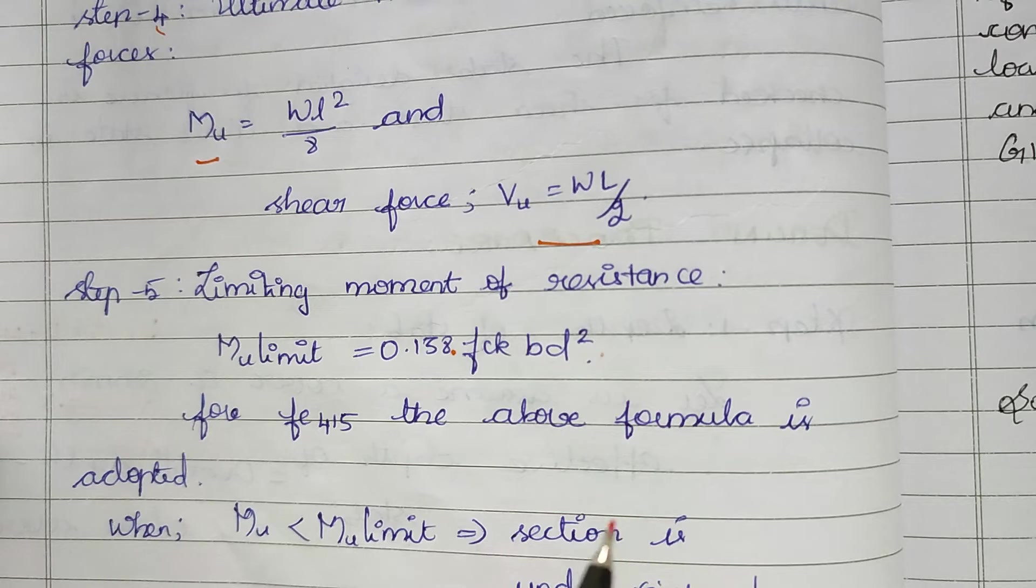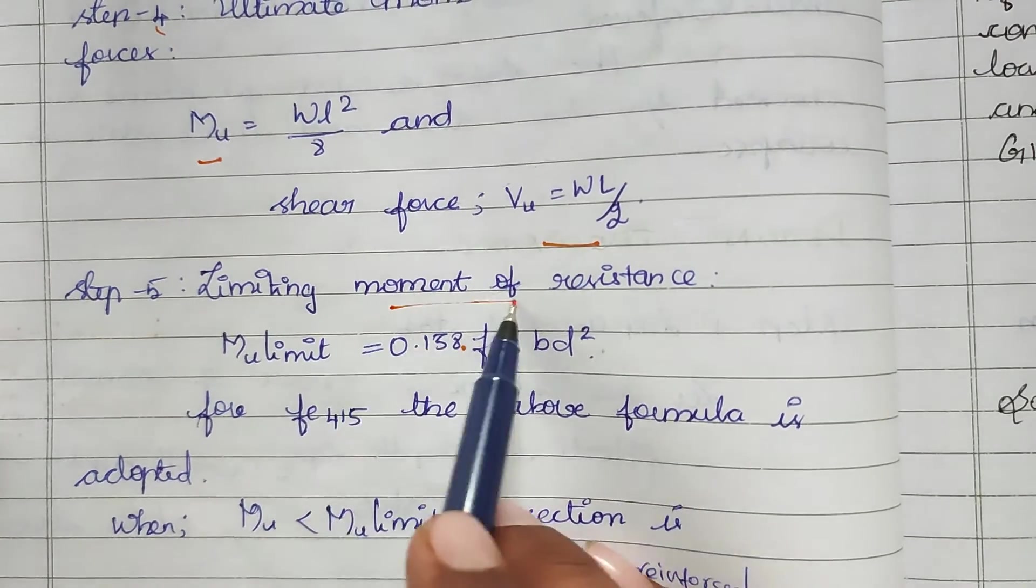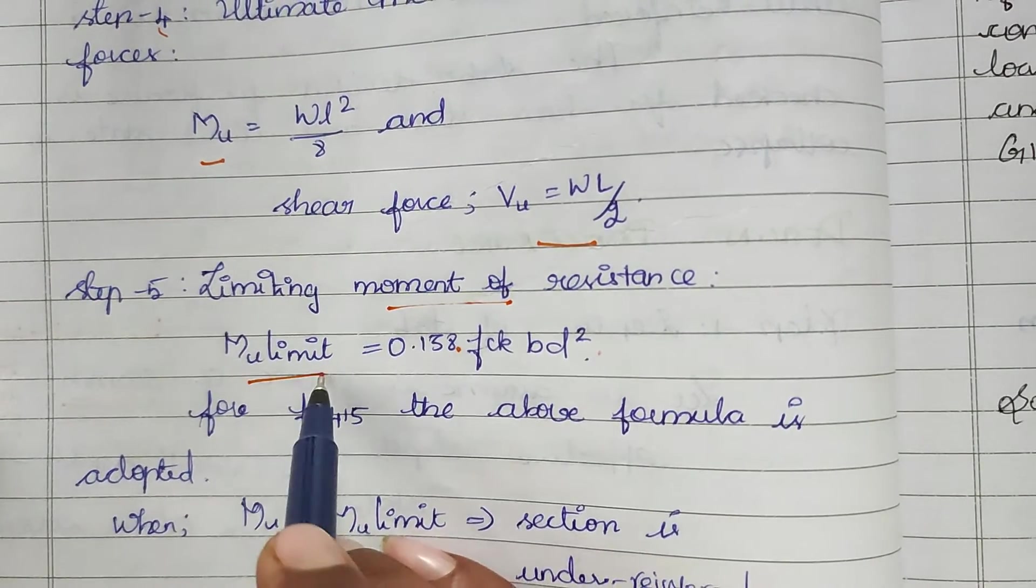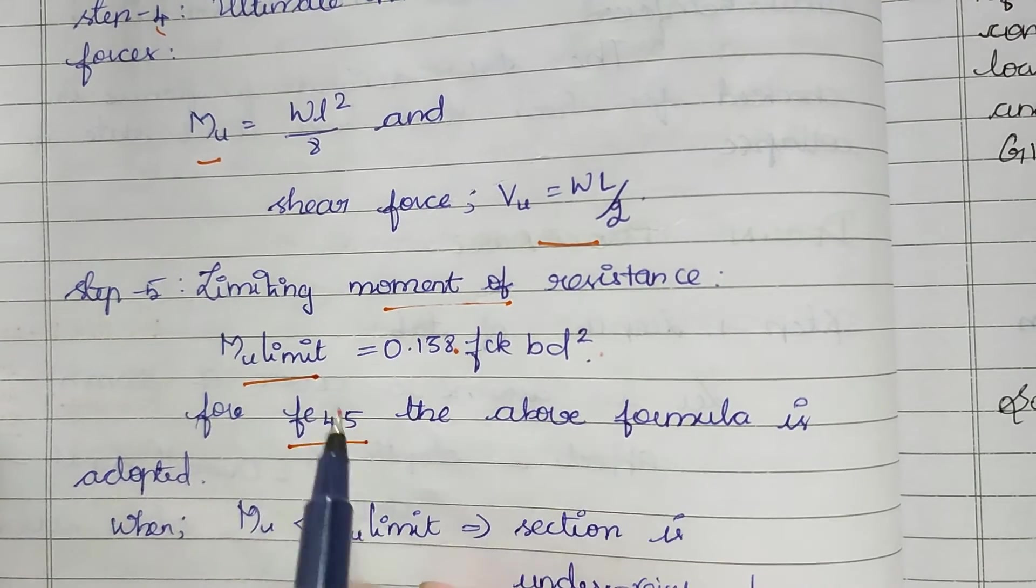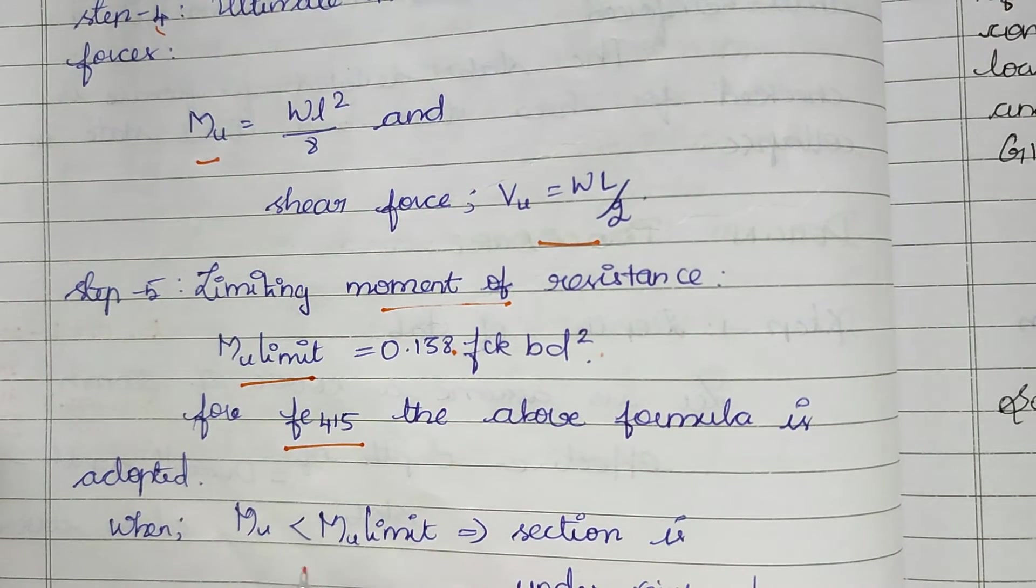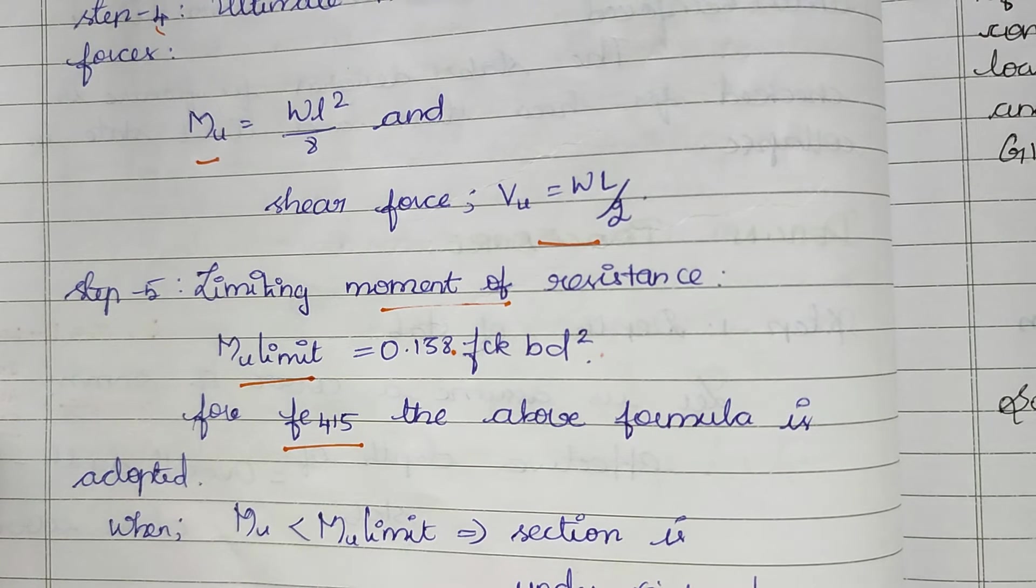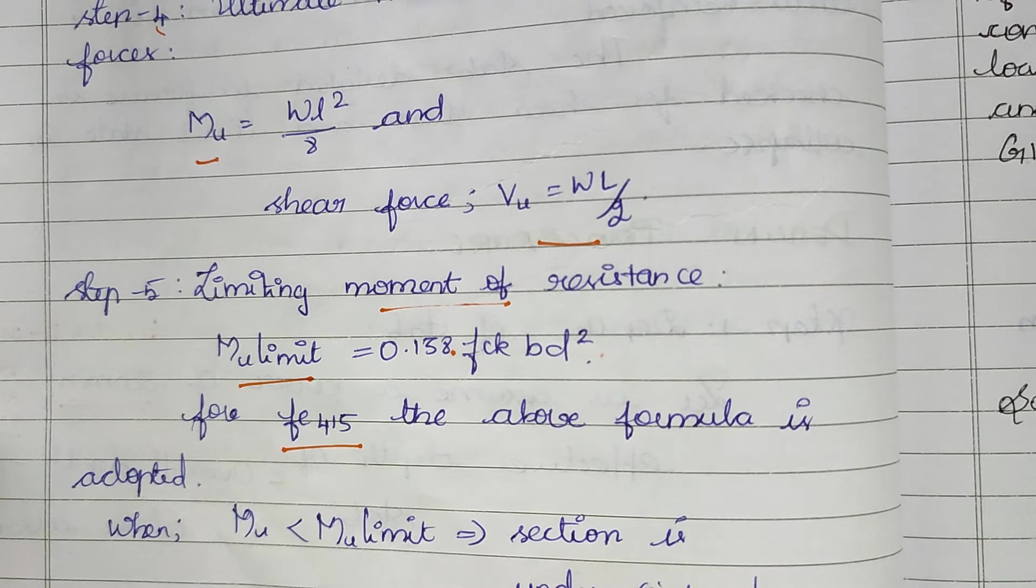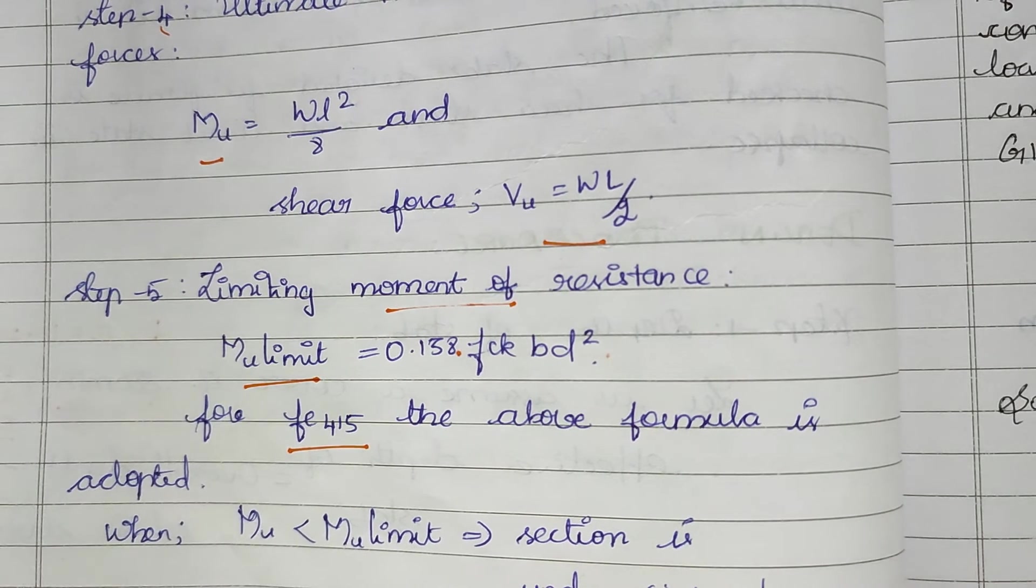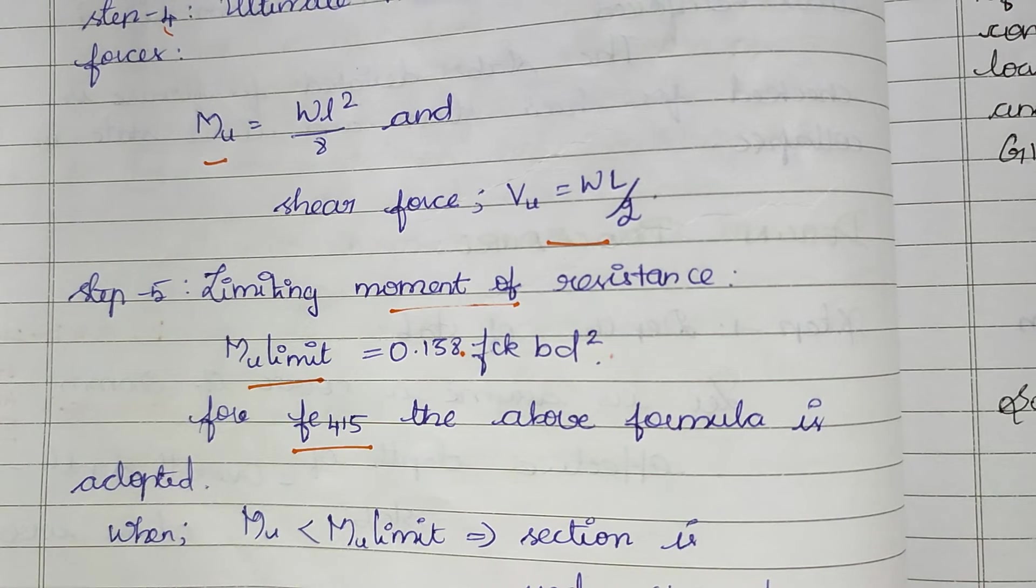The limiting moment of resistance formula is Mu,limit = 0.138 fck bd². For Fe415, we use this formula. When Mu is less than Mu,limit, the section is under-reinforced. If Mu,limit is greater than Mu,limit, the section is over-reinforced. When Mu equals Mu,limit, it's a balanced section.